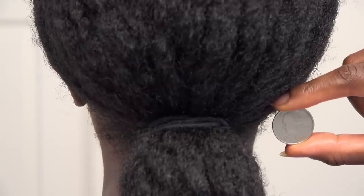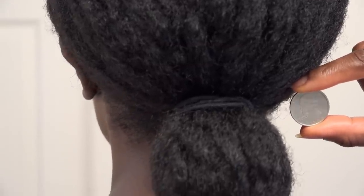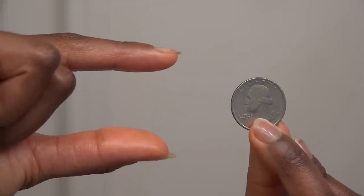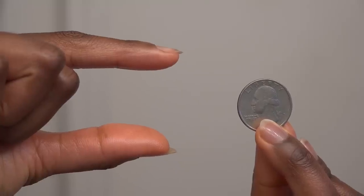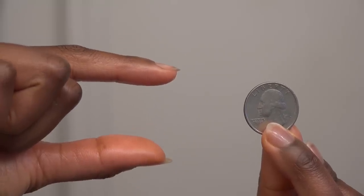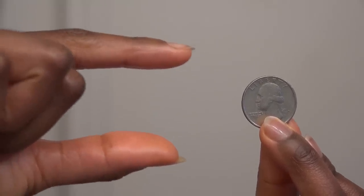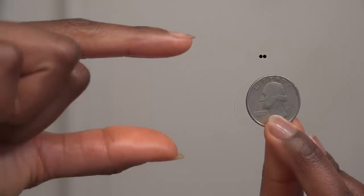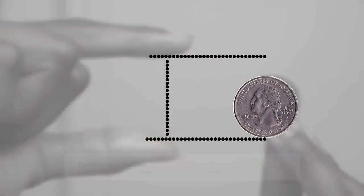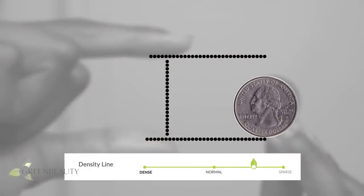As you can see, my ponytail is a lot larger than a quarter. How much larger and how much smaller your ponytail is from a quarter tells you how extreme your density is. Based on how much larger my ponytail is, if I had to be more exact, I would say I'm right around here. But if someone asked, I would just say dense.